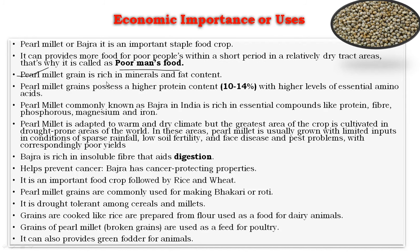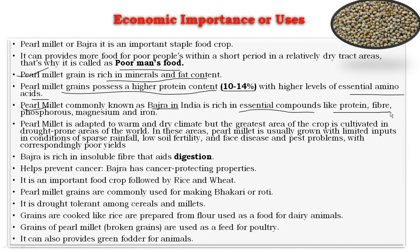Pearl millet grain is rich in minerals, iron, and fat content, and the grains possess higher protein content of 10 to 14 percent with higher levels of essential amino acids. Pearl millet is commonly known as Bajra in India and is rich in essential compounds like protein, fiber, phosphorus, magnesium, and iron. It is adapted to warm and dry climates, and the greatest area of the crop is cultivated in drought-prone areas, with limited inputs, sparse rainfall, low soil fertility, and disease and pest problems resulting in poor yields.